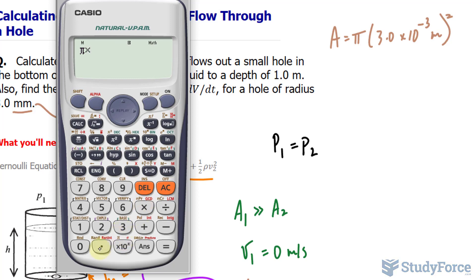So pi times 3.0 times 10 to the power of negative 3. And that is being raised to the power of 2. So I'll just be careful with that. Raise that to the power of 2. Then we'll multiply this by the velocity.